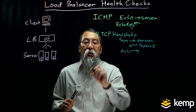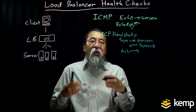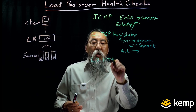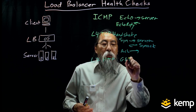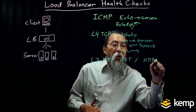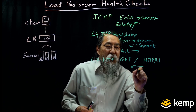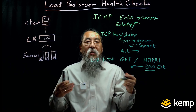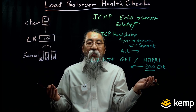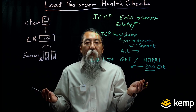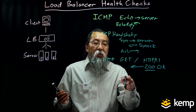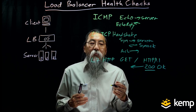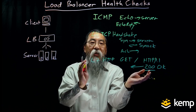Next we get more advanced with a layer seven health check. For HTTP, we'll be sending content to the application and expecting some sort of response. For example, we might send a GET / HTTP/1.1 and then get a response. Within that response header we should see a 200 OK — the status code meaning the application server is happy and ready to take connections. You might also see other well-known status codes like 404 Page Not Found or 503 Server Unavailable. The load balancer looks at that status code to determine server availability, and if we see a 404, that application server will not be put into service.